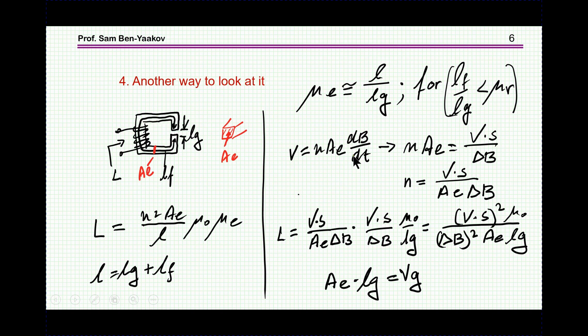Then we have this equation: that V equals N times A sub E cross section area times dB/dt, from which I get this. Number of turns times the cross section area equals the volt second divided by delta B, the peak to peak value. Or I can get N as this thing.